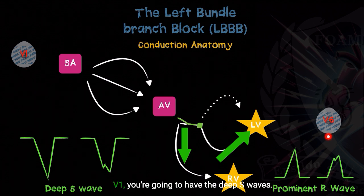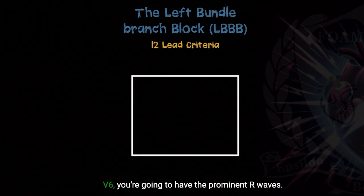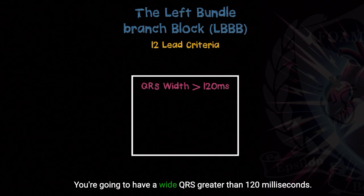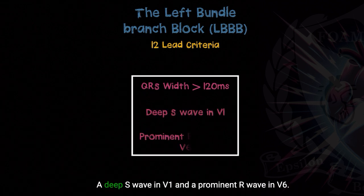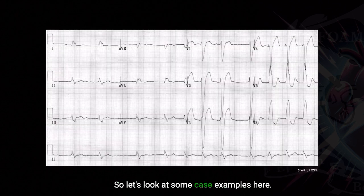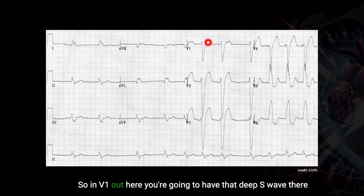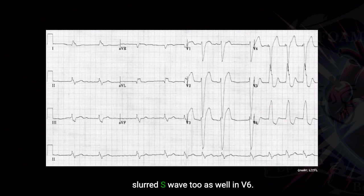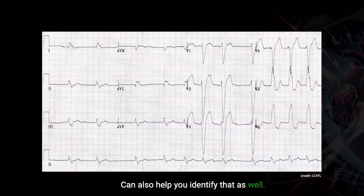For the most part, remember: in V1 you're going to have the deep S-waves, and in V6 you're going to have the prominent R-waves. The exact 12-lead criteria are: a wide QRS greater than 120 milliseconds, a deep S-wave in V1, and a prominent R-wave in V6. Looking at case examples, in V1 you can see that deep S-wave, and in V6 you'll see a prominent R-wave. Many people also like to include a very slurred S-wave in V6 as an additional identifying feature.